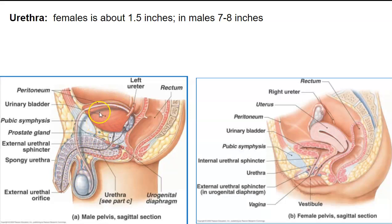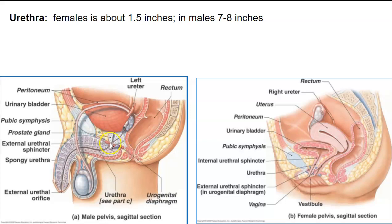Notice here's the bladder and here's the ureter. The bladder empties into the urethra, and this is the prostate gland. This is the external urethral sphincter — you can control this voluntarily, so when you have the urge to urinate, you can relax this muscle and urine can flow out. On the female anatomy, similarly, we have the external urethral sphincter right here.